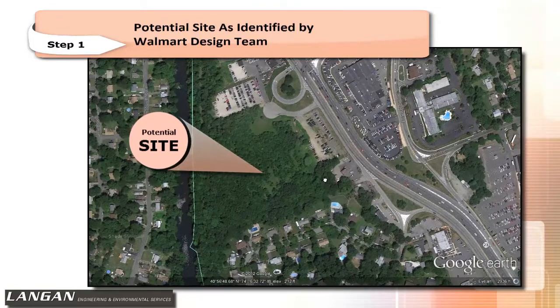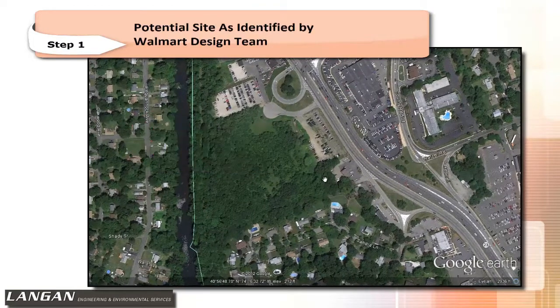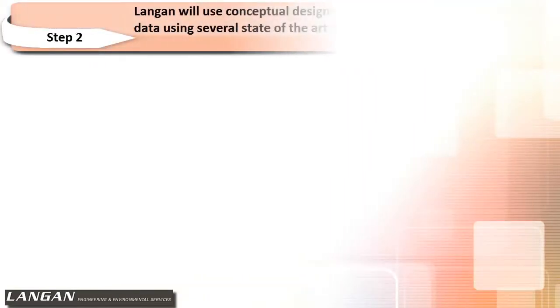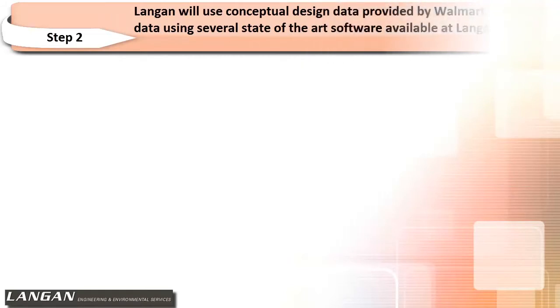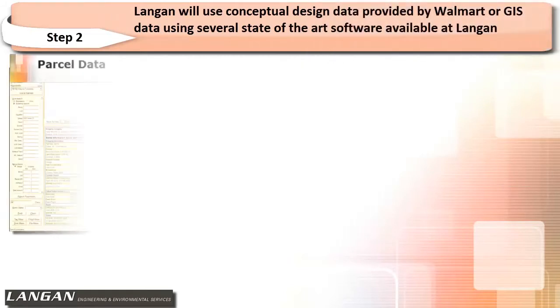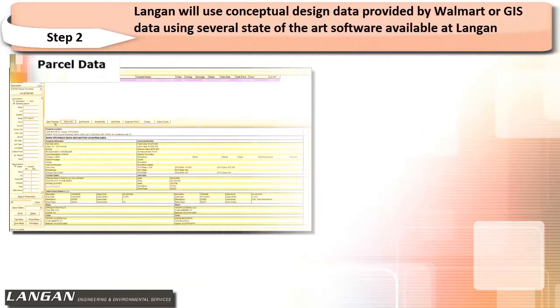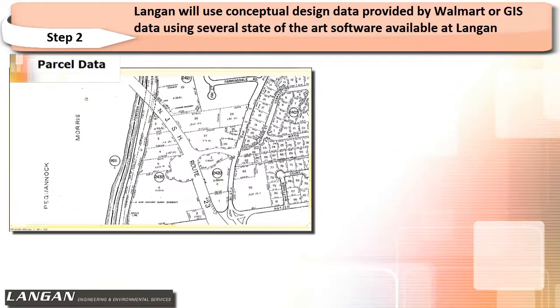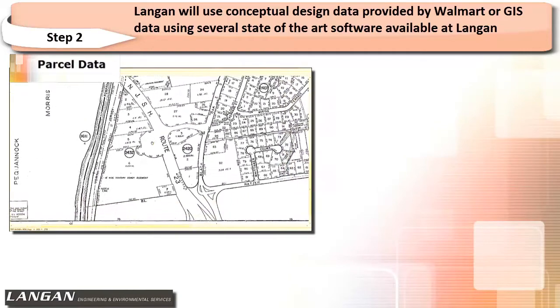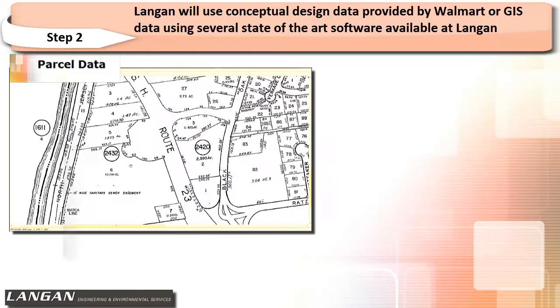The first step is to identify a potential site for engineering evaluation. In the second step, Langan will use conceptual design data provided by Walmart or GIS data using several state-of-the-art software available at Langan.